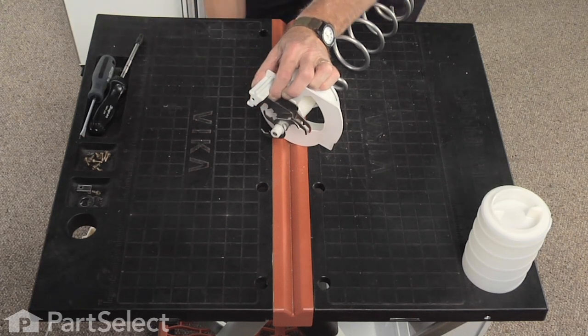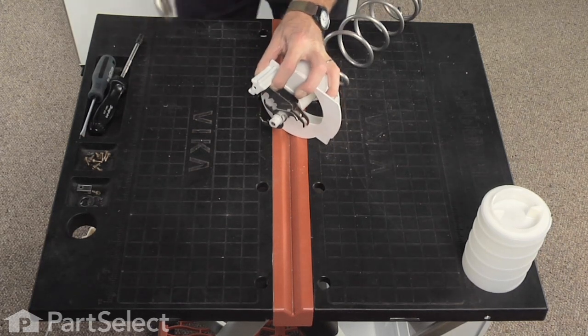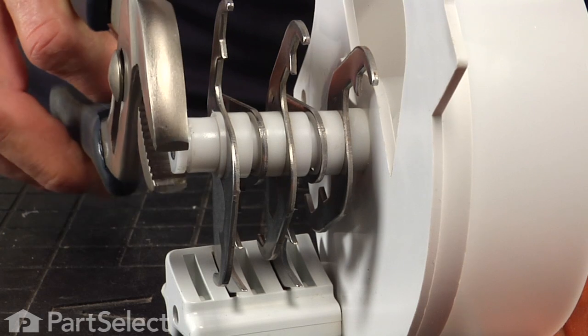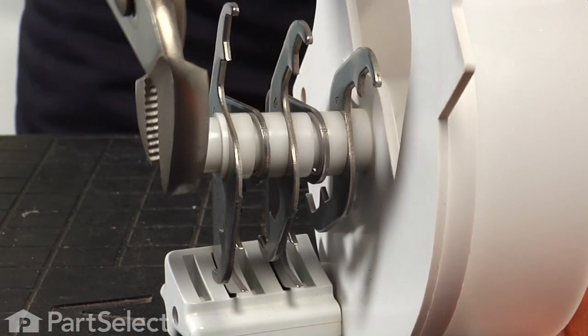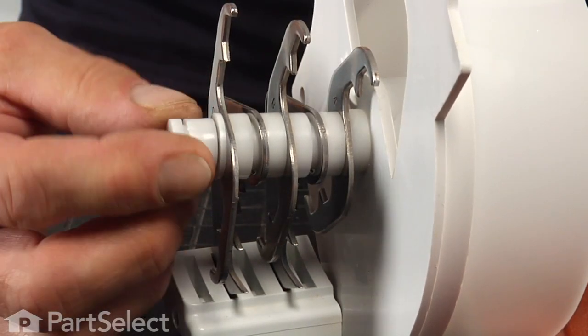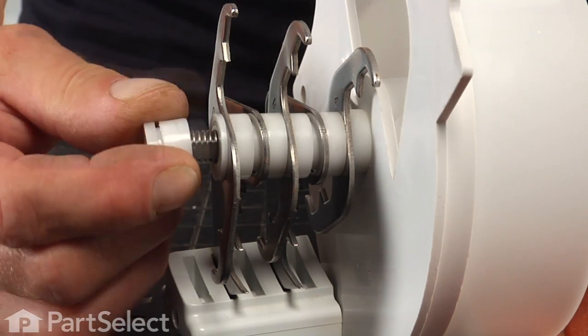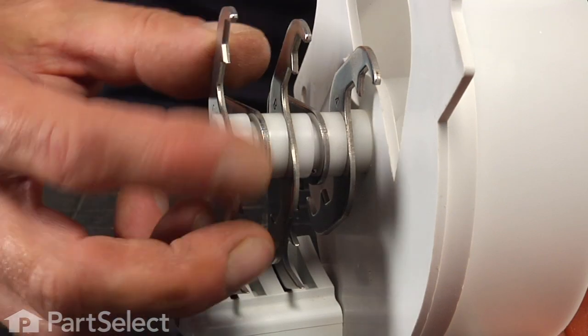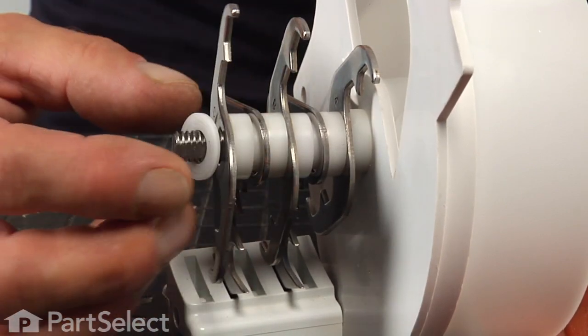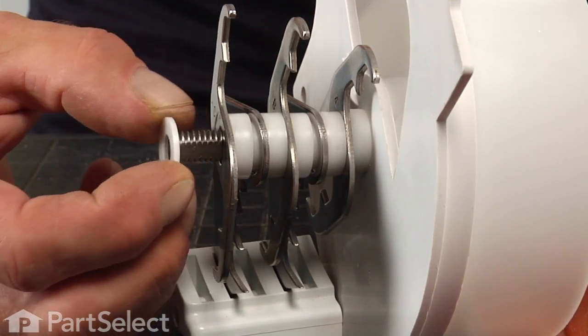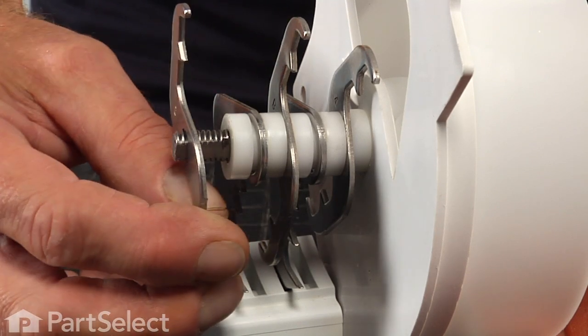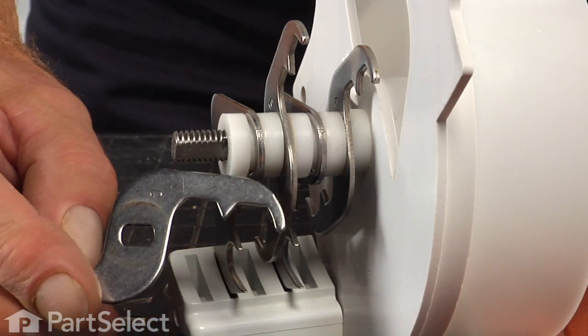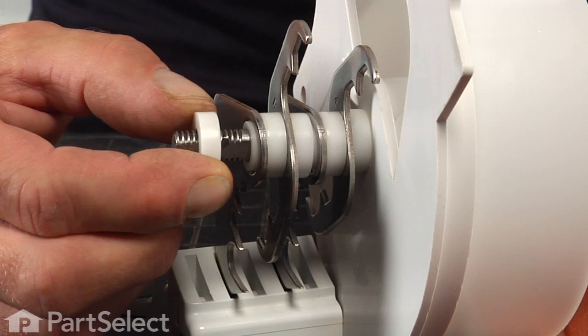Now that we have the auger assembly removed from the housing, we need to remove this nylon nut on the very end of the shaft. It's a left hand thread and a pair of channel locks will work nicely on that. And there's a series of bushings and cutter arms that will have to come off, so we want to lay those out carefully so we know how to put them back together, or if you have a digital camera it's a good time to take a picture of it.